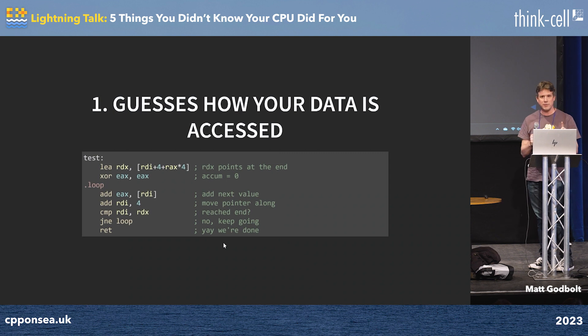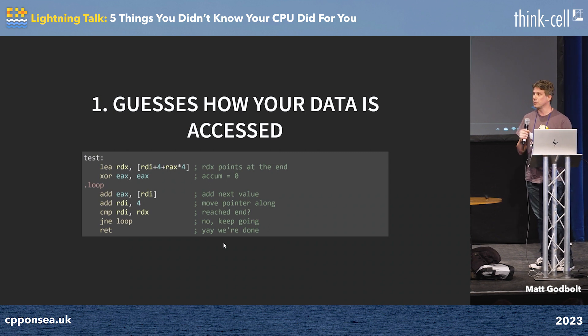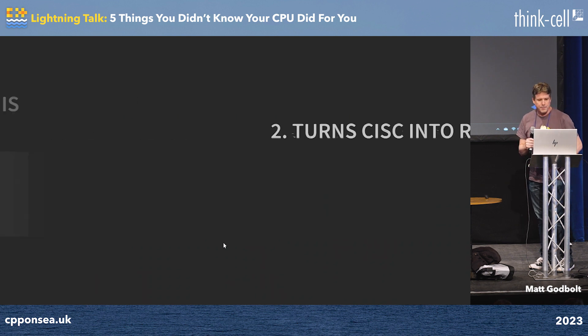It starts getting ahead of you and pre-fetching things even before you've asked for them. It reads the flow of your program and understands which way you're reading memory, which is pretty clever — except when it gets it wrong.